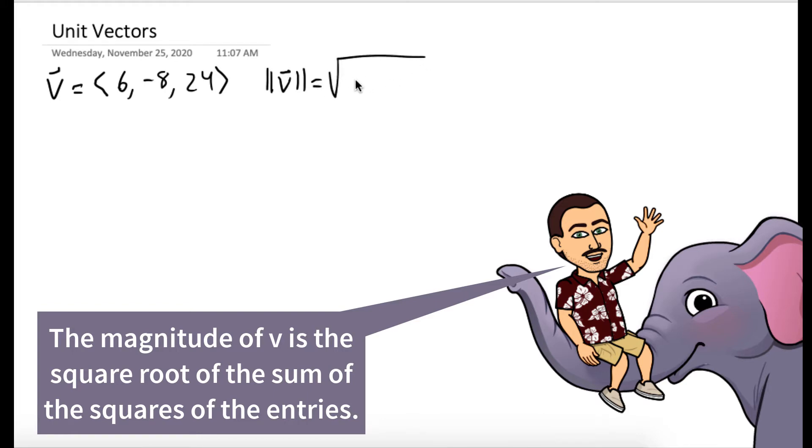The magnitude of v is the sum of the squares, the square root of the sum of the squares. 6 squared plus negative 8 squared plus 24 squared.